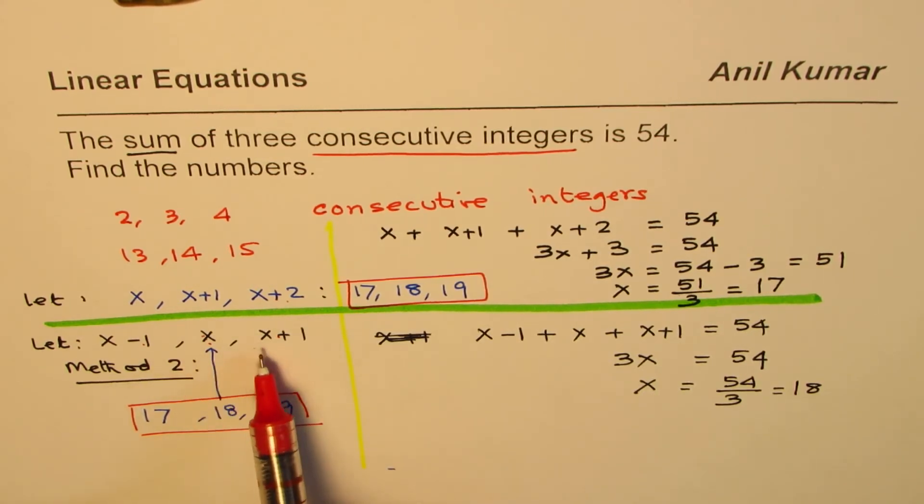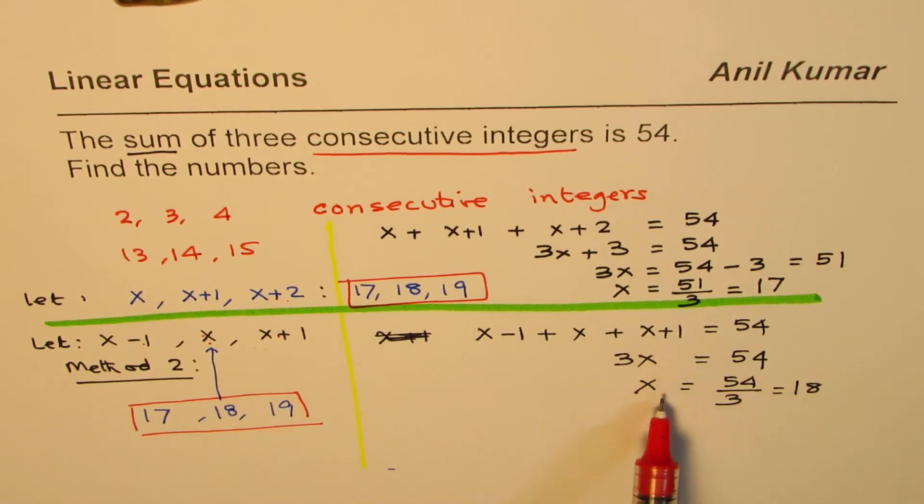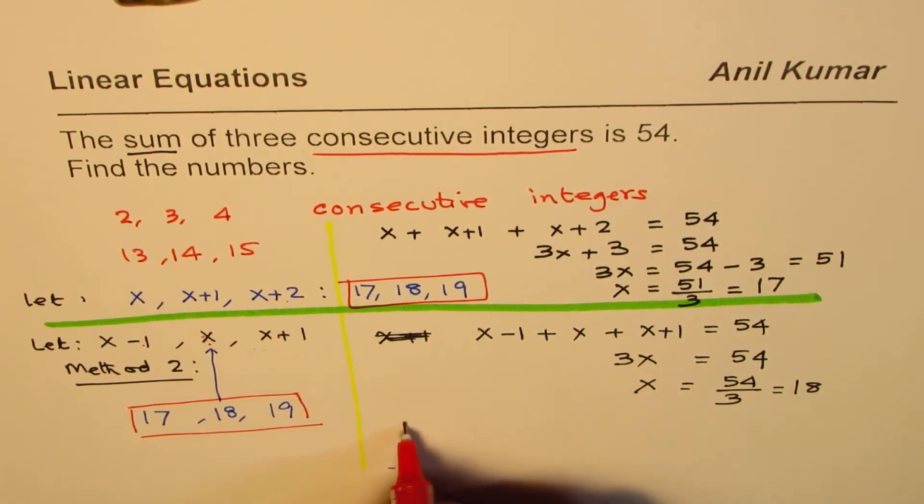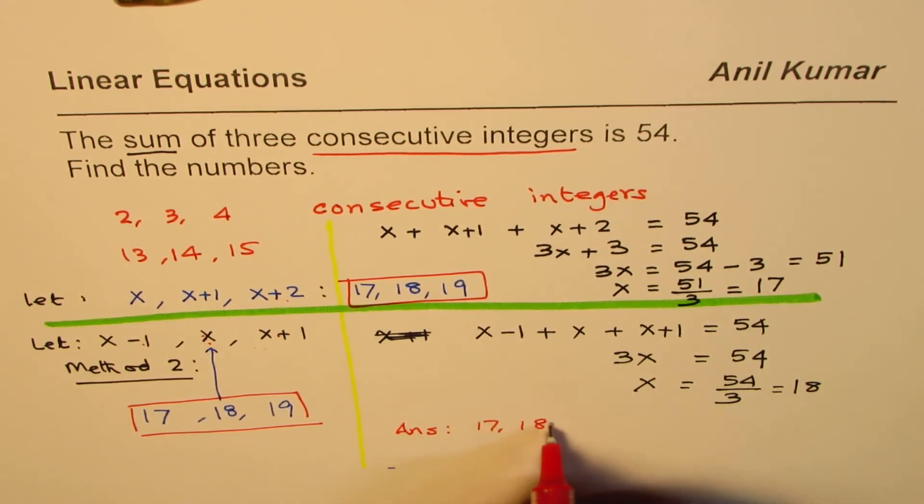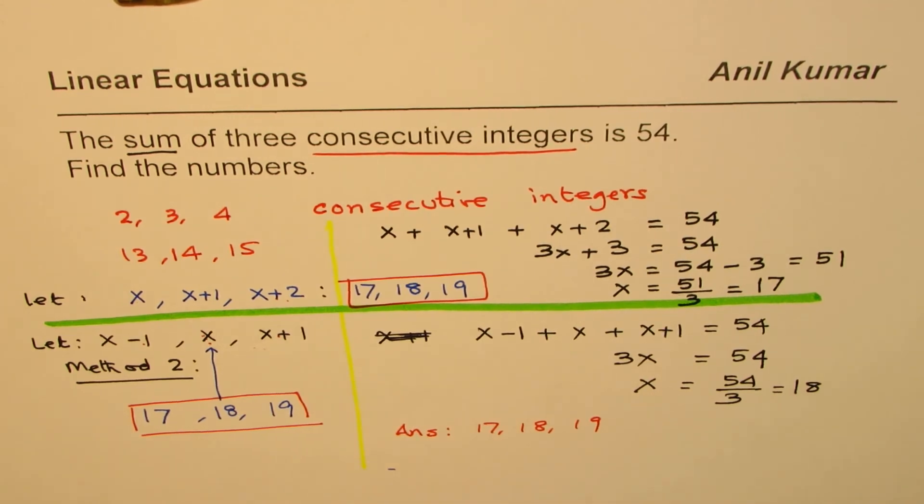So, the idea is, this is sometimes helpful in calculations. You can see, lesser number of steps. Otherwise, both are correct methods leading to same answer, which is 17, 18, and 19 are the three consecutive integers whose sum is 54. I hope that helps you to understand the concept.